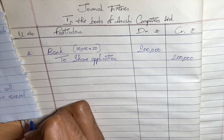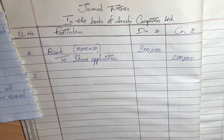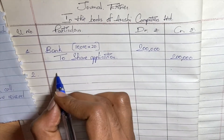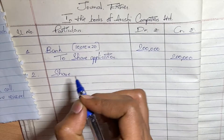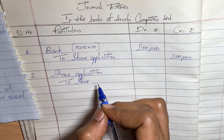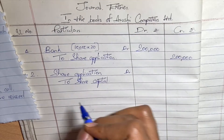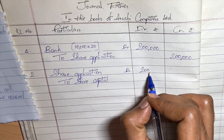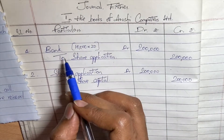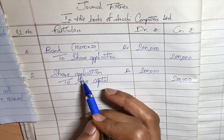The second entry is for the transfer of share application to share capital. We debit share application — it has a credit balance, now we close it by debiting it — and then we credit equity share capital. It will be the same amount, so that's 2 lakhs.